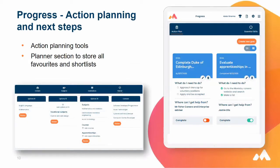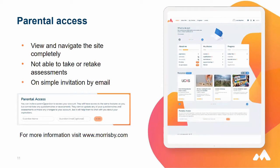The action planning and next steps section is all about how students are going to get to where they want to go. The planning section stores all their favourite shortlists. The planner covers options at 14 and what they're thinking about, options at 16, options at 18, and careers. A lot of schools don't appreciate that you can actually populate your options for year 14 and 16 into Morrisby careers — so if you want to do that, you can send an email to our support so your school's curriculum is listed and students know what subjects they can choose for their GCSE options or post-16.